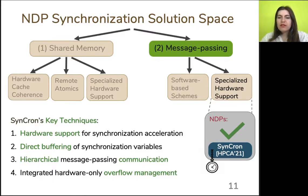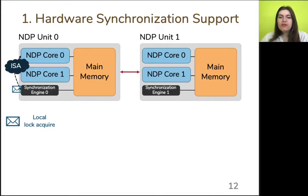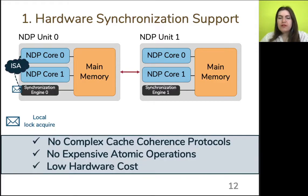Synchron consists of four key techniques: low-cost hardware units that handle synchronization requests, a specialized cache memory structure to buffer synchronization variables, a hierarchical synchronization scheme, and hardware-only programmer-transparent overflow management. First, we design low-cost hardware units, the synchronization engines, which are located at each NDP unit of the system and coordinate synchronization among NDP cores. NDP cores communicate their requests using two new ISA instructions, which are used to assemble a message sent from the core to the synchronization engine, communicating necessary information from the software to the hardware. Synchronization engines eliminate the need for complex cache coherence protocols and expensive atomic operations, and also incur low hardware cost.